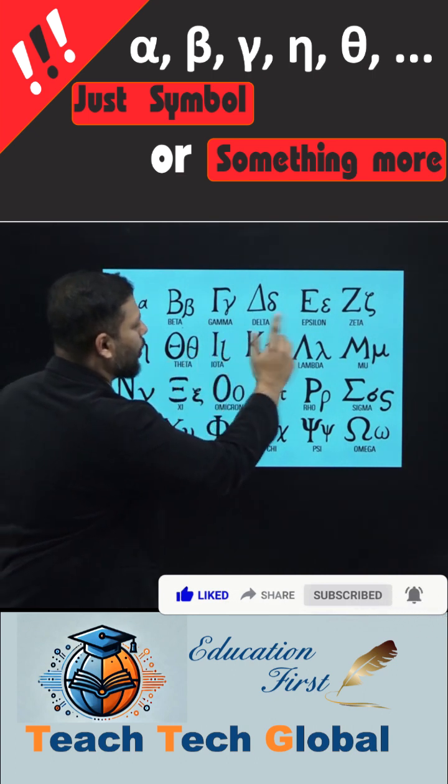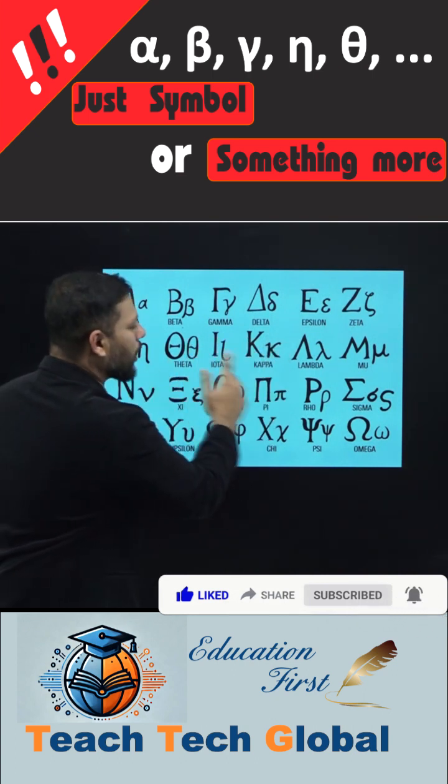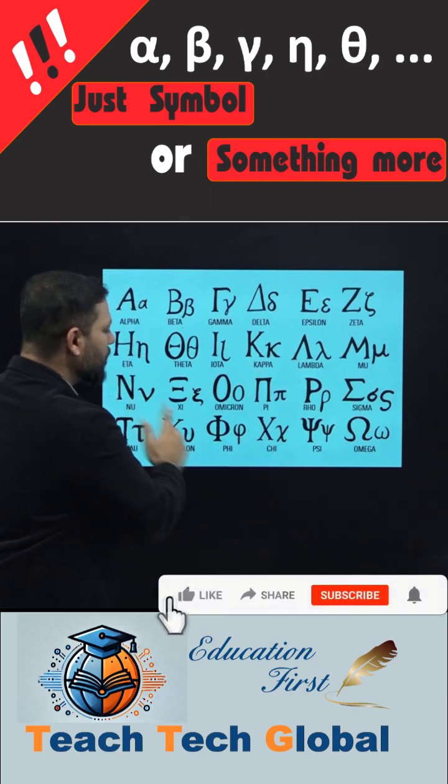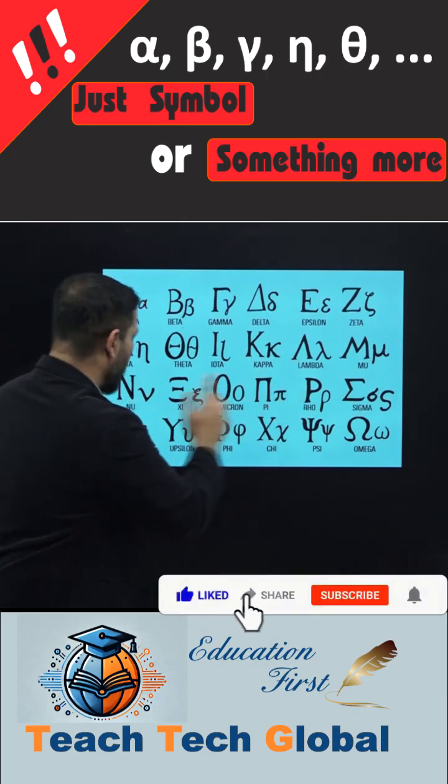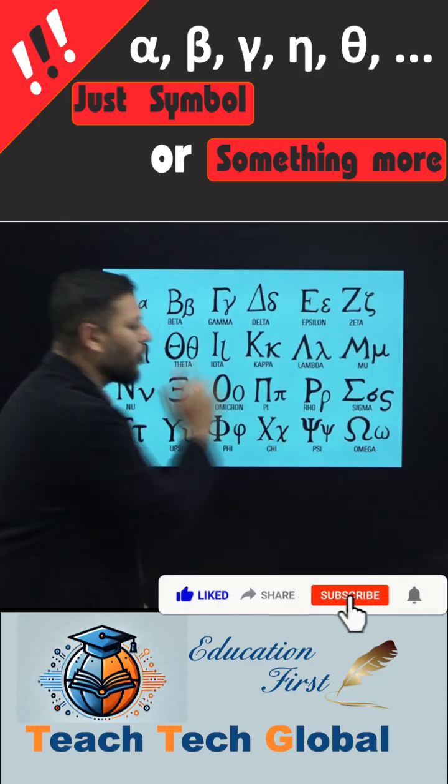Alpha, beta, gamma, delta, epsilon, zeta, eta, theta, iota, kappa, lambda, mu, nu, xi, omicron, pi, rho, sigma, tau, upsilon, phi, chi, psi, omega.